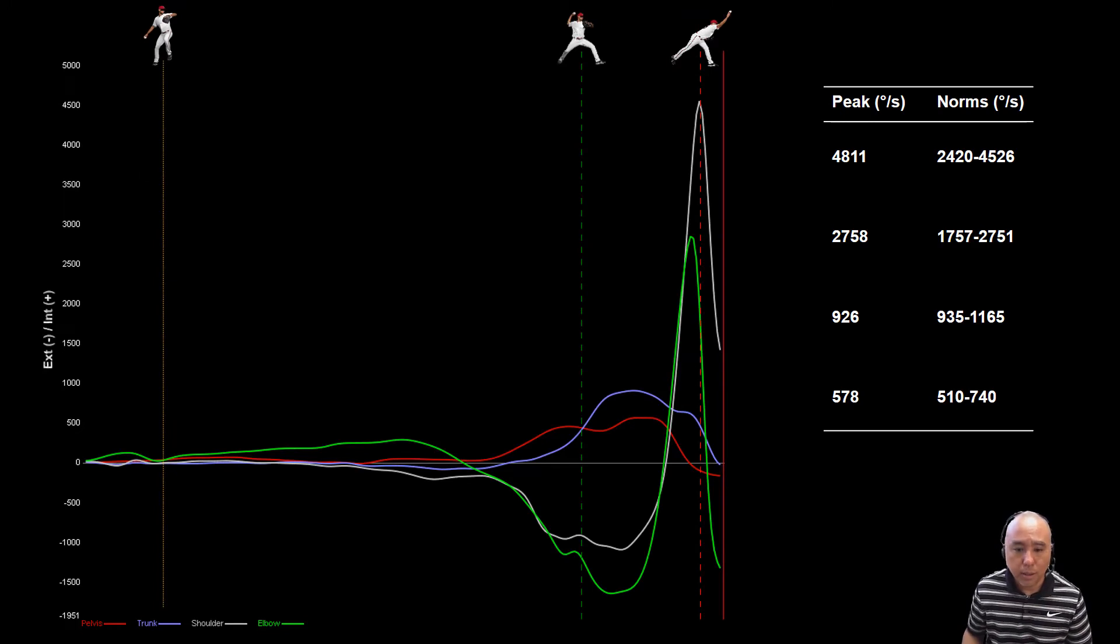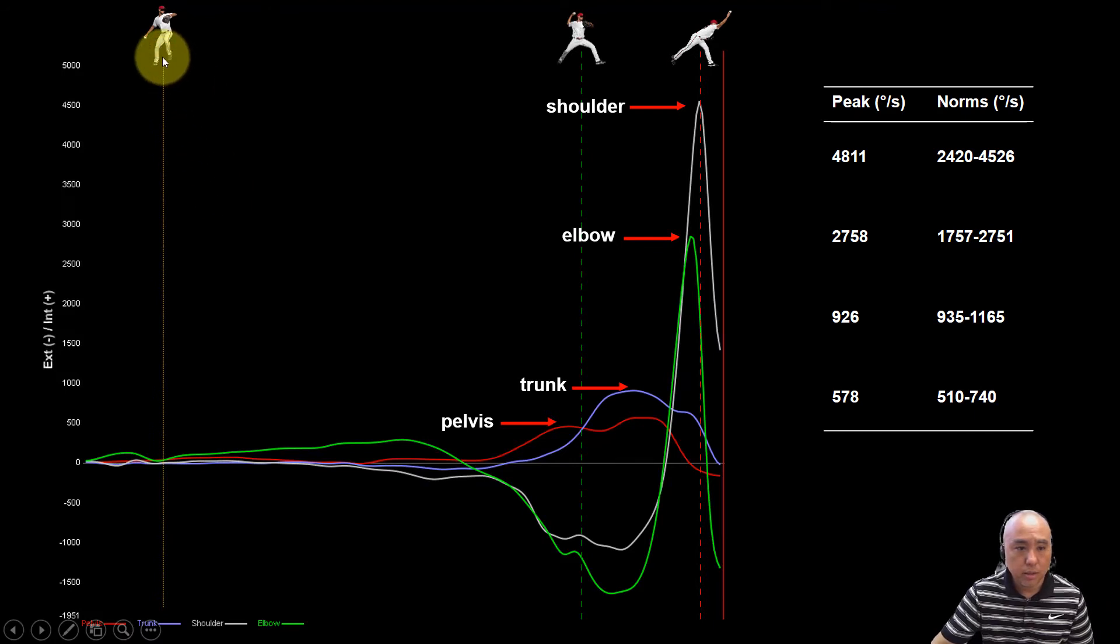And if we look at this player here, the pelvis is represented by the red curve, the trunk represented by the purplish curve, elbows represented by the green, and then the gray curve is the shoulder internal rotation. Notice here that the sequence throughout the pitch cycle. Let me show you the pitch cycle: this is what's called maximum high, knee high, and then front foot contact is here, and then ball release. This right here represents the arm cocking and the arm accelerating phase.